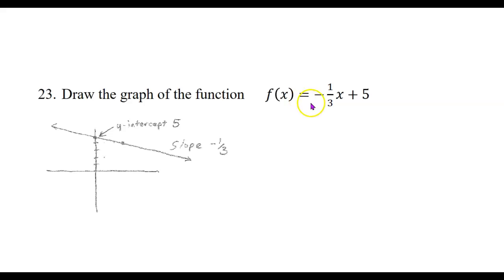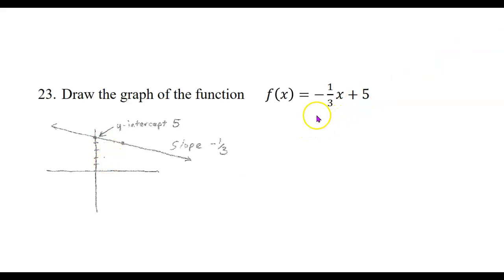If you recognize this as a linear function — something in the form f of x or y equals mx plus b — then you know the graph is going to be a straight line with a slope of negative one-third and a y-intercept of 5. The easiest way to draw the graph is to start at the y-intercept up here at 5 on the y-axis. The rise over run is negative 1 over 3, so if you go down 1 and over 3, you get to another point on the line. You can do that again — go down another space and over another 3 spaces — and that shows you how to draw the line.